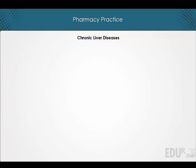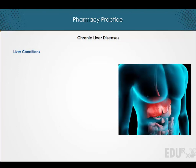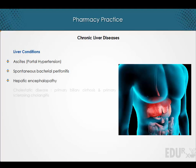In this lecture we shall discuss liver conditions which include ascites, spontaneous bacterial peritonitis, hepatic encephalopathy, cholestatic disease — which includes primary biliary cirrhosis and primary sclerosing cholangitis — and autoimmune chronic hepatitis.